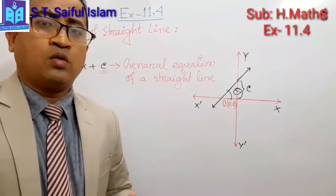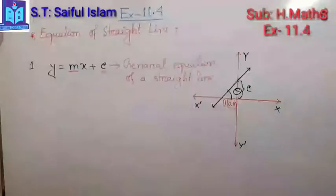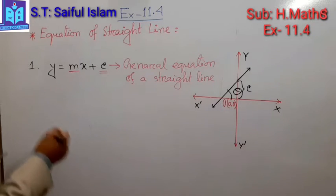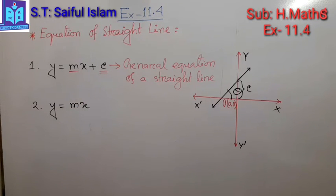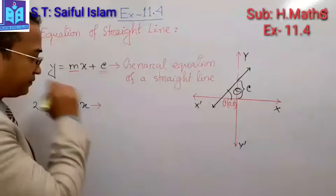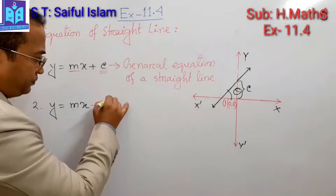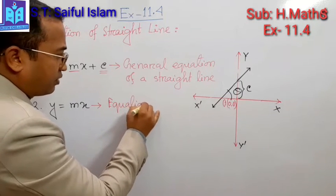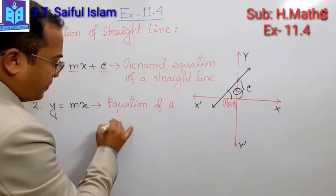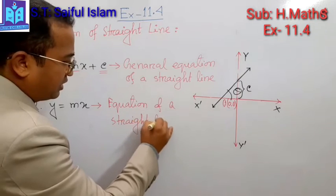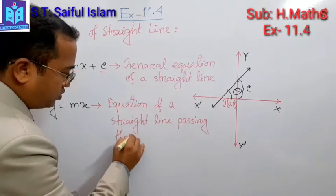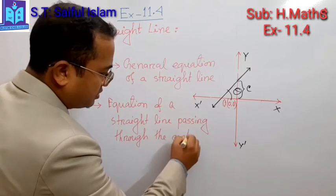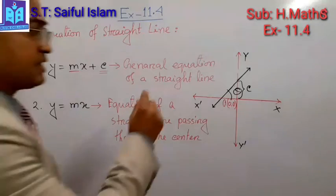If this line passes through the origin, then c will be 0, so the equation becomes y equals mx. This is the equation of a straight line passing through the center, because c is equal to 0.